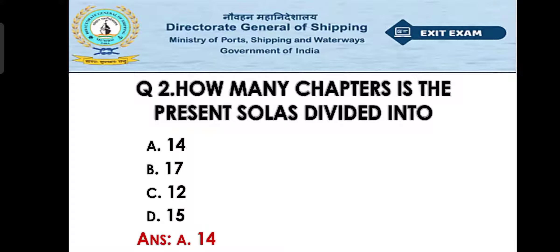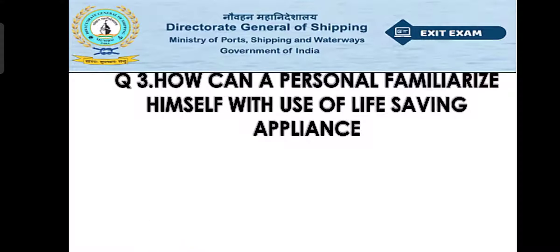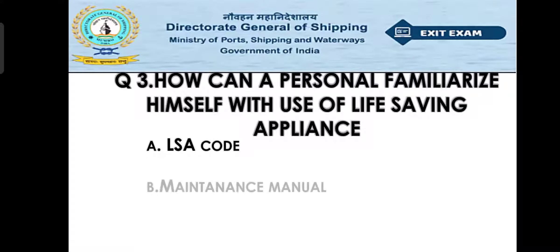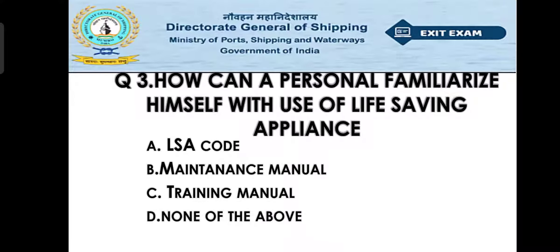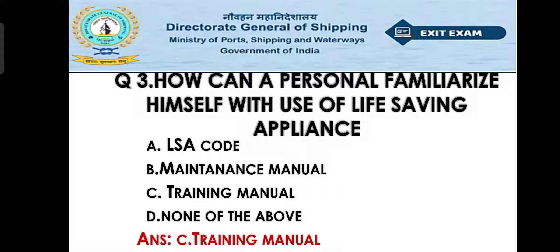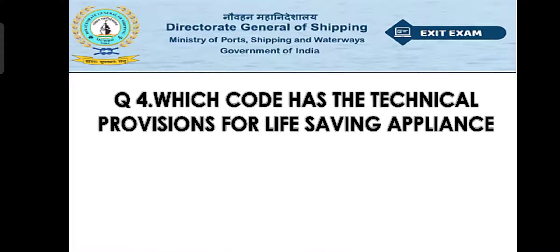Question number three: How can a person familiarize himself with the use of life-saving appliances? Option A: LSA code, Option B: Maintenance manual, Option C: Training manual, Option D: None of the above. The right answer is Option C, the training manual. In the training manual, all the information about life-saving appliances is given — how to use a life jacket, survival craft, lifeboat, and pilot techniques.